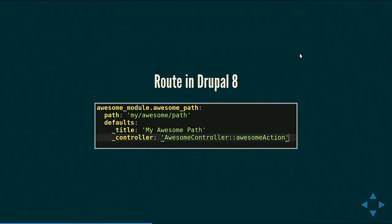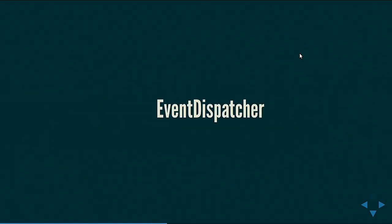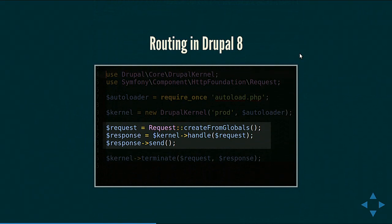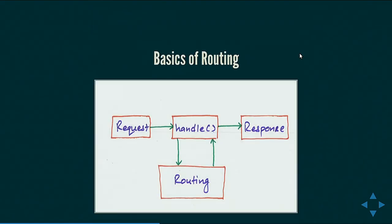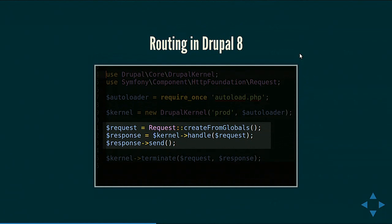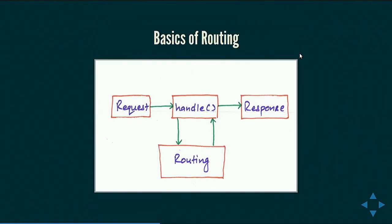In Drupal 8, the routing component of Symfony allows us to create a route in a routing.yml file. So in this case 'my_awesome_path' is mapped to this controller — an AwesomeController object and its awesome_action method. Looking at the same three lines of index.php code, the handle function is actually the one that passes control to routing. The flow looks like this: the request is sent to handle, which sends the routing process to the routing component, which sends the response back.